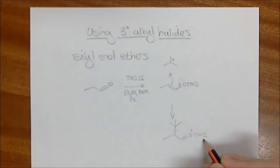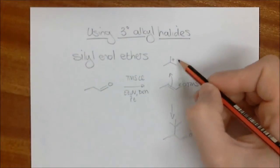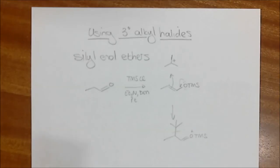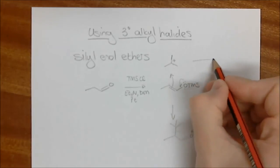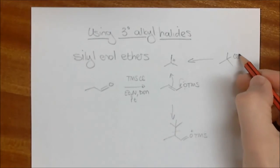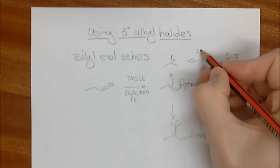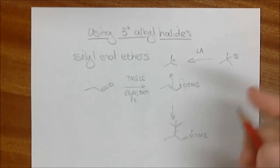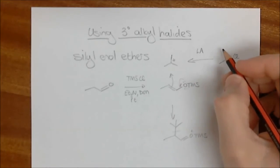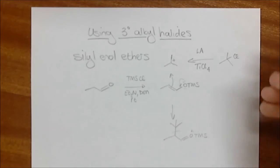One way to think about TMS is just as a type of proton — at this stage it is very ready to fall off onto the solvent during workup. The question is how do we generate the tertiary carbocation? We generate it from a tertiary alkyl halide — for example one bearing a chlorine. We need to add something that pulls the chlorine off to generate the carbocation, and we do this by adding a very strong Lewis acid. An example would be titanium tetrachloride (TiCl4), which pulls off the chlorine.